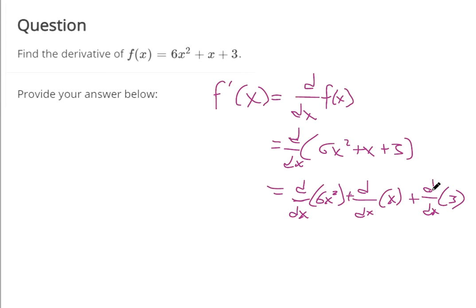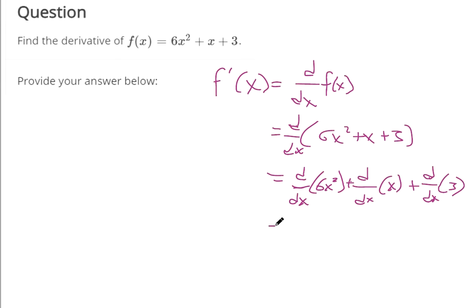Because we have something called the power rule with derivatives. Instead of using the limit definition of a derivative, if you can isolate it to be just something with a power like 6x squared, the way you can find the derivative is make that power come down and multiply to this 6, and then reduce it by 1.